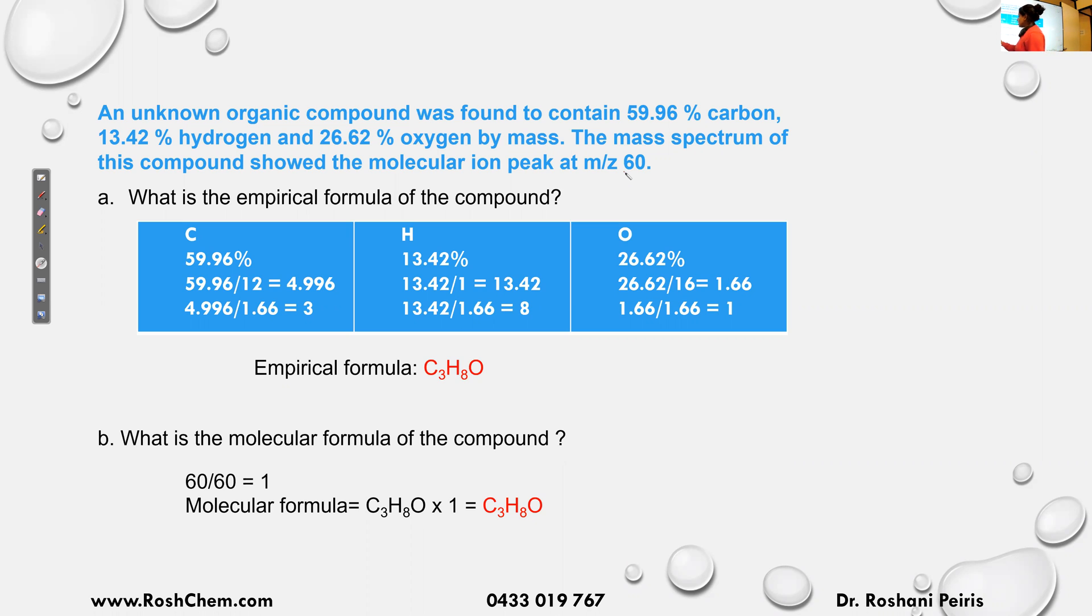So we know the empirical formula is C₃H₈O. We should find the molecular formula is how many times the empirical formula. So molar mass of my compound, the molecular formula is 60 divided by the molar mass of the empirical formula. So calculate what is C₃H₈O. So carbon is 12 times 3 plus hydrogen 1 times 8 plus 16. So that will also add up to 60.